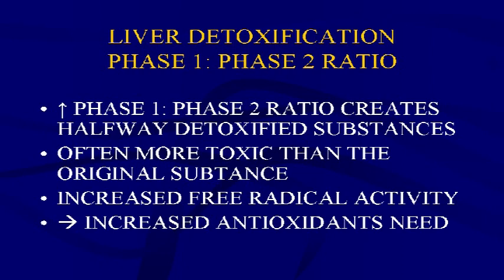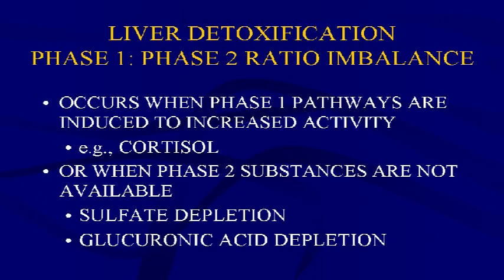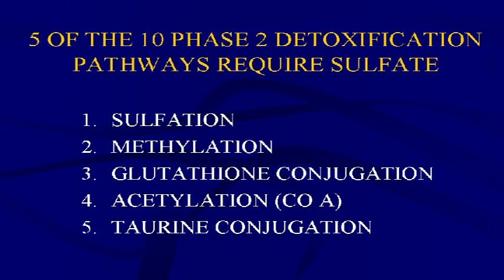This occurs when phase one pathways are induced — such as in high cortisol and stress states — or when phase two substrates are unavailable due to sulfate or glucuronic acid depletion. Five of the ten phase two detoxification pathways require sulfate: sulfation, methylation using sulfur amino acid pathways through homocysteine cycling, glutathione conjugation which contains cysteine, acetylation using acetyl coenzyme A — whose activated form of pantothenic acid uses a sulfur molecule — and taurine conjugation.